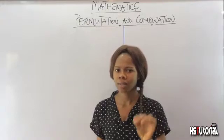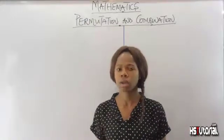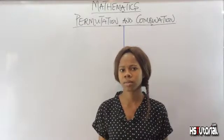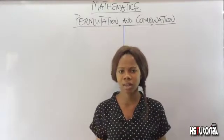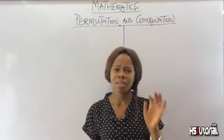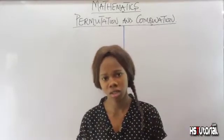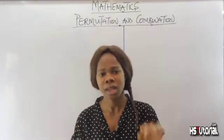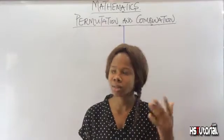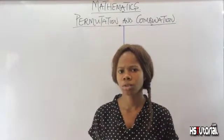Permutation is simply the arrangement of n distinct objects taking r at a time, without taking order into consideration.